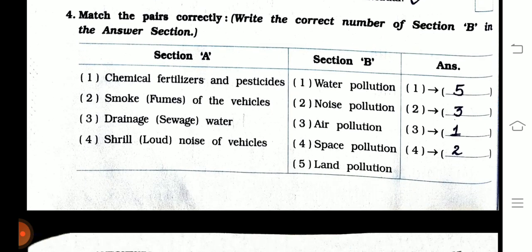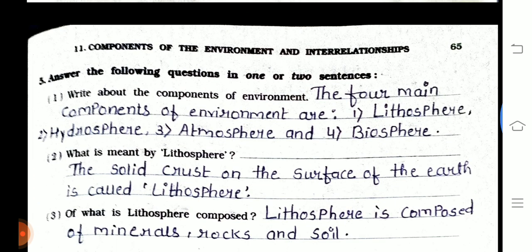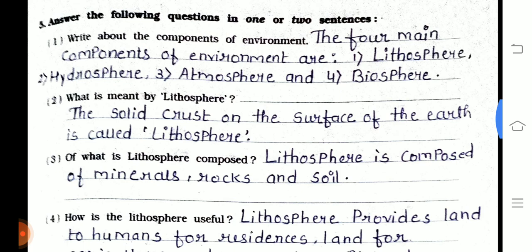Question number three is: answer the following questions in one or two sentences. First one — write about the components of environment. The four main components of environment are lithosphere, hydrosphere, atmosphere, and biosphere. Second one — what is meant by lithosphere? The solid crust on the earth's surface is called lithosphere.